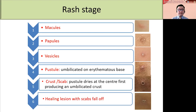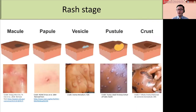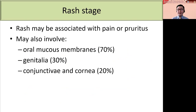This diagram shows the evolution of skin lesions seen in monkeypox, from macules to papules, to vesicles, to pustules — which are typically umbilicated in shape on an erythematous base. These pustules eventually dry up and form a crust or scabs, which heal at the center forming an umbilicated crust, and this crust eventually falls off. The rash in monkeypox can be associated with pain or pruritus, and may involve lesions in the oral mucous membrane, genitalia, conjunctiva, or even cornea.